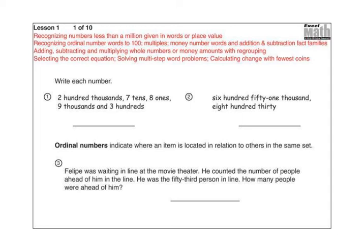Alright, let's go ahead and take a look at these first problems. You should have a paper in front of you, an Excel lesson number one in front of you. It looks just like my paper. I'm going to guide you through it. Don't go ahead of where I am on the video but don't get behind either and just copy things. So numbers one and two are asking you to write the numbers that are described here. Number one has two hundred thousand, seven tens, eight ones, nine thousands, and three hundreds.